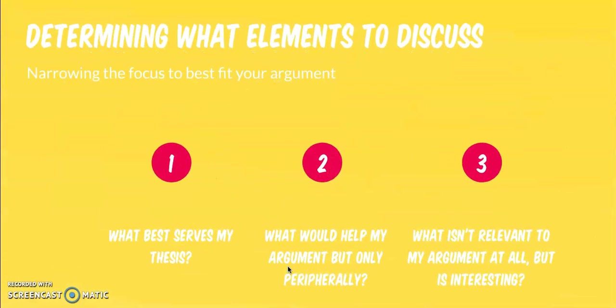Determining what elements to discuss in your paper is also important. After you determine your claim, you have to figure out which of those elements is best going to serve you. After you write down all the verbal and visual elements and kind of brainstorm, then it's time to eliminate things and choose things that maybe warrant further discussion in the paper. Always go with this first and foremost, what best serves my thesis? What would help my argument but only peripherally? You probably don't want lots of discussion in there about this element or that element if it's there but it's not really relevant to your argument. This is what we would call filler. And last but not least, what isn't relevant to my argument at all but is interesting? Unfortunately, this will be a reality. You can't just write interesting things in this paper.